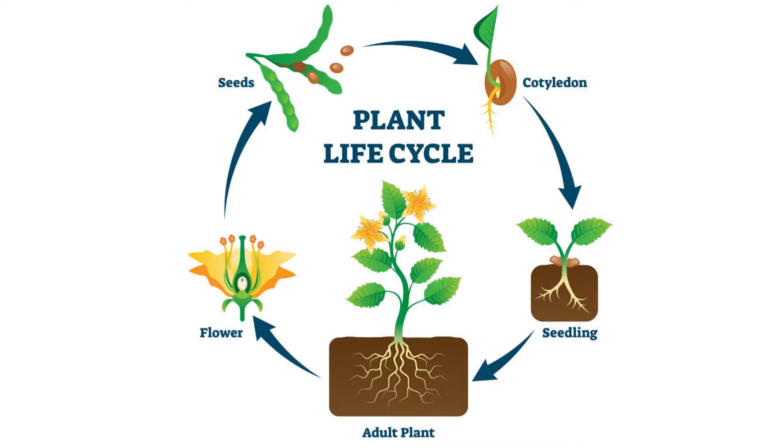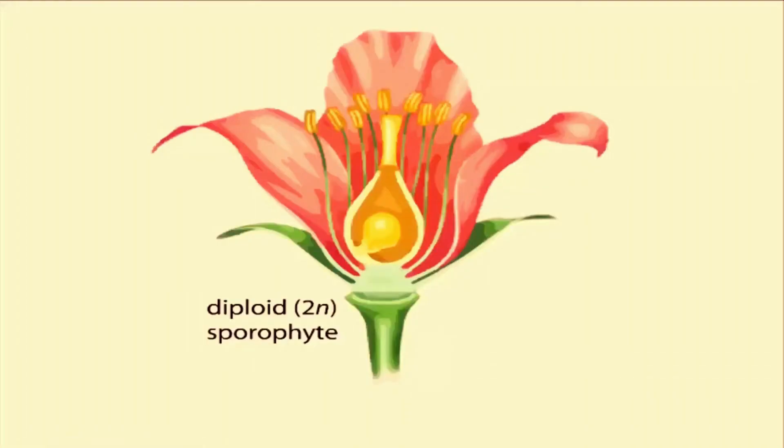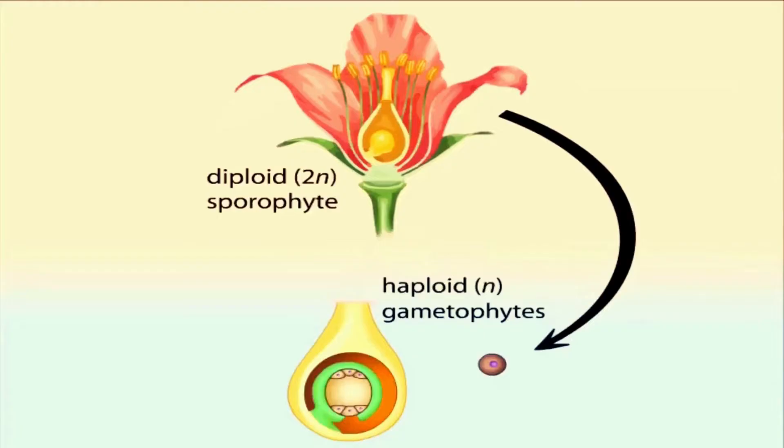Flowers are the reproductive part of a plant or modified shoot of a plant. Let's start with labeling the different parts of a flower.